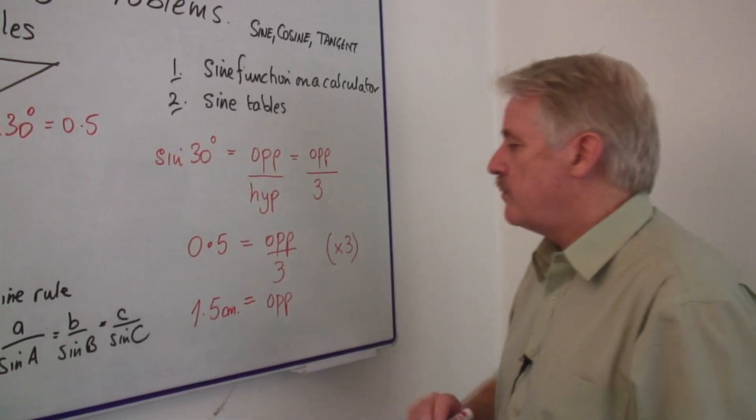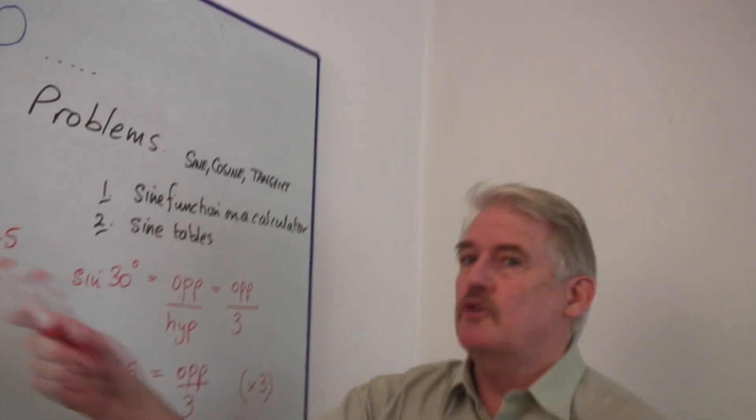So the opposite side is of length 1.5 centimeters. It's half the length of the hypotenuse.